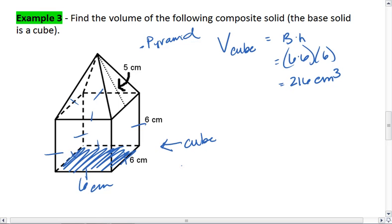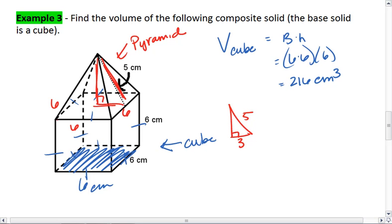Now let's solve for the volume of the pyramid. This pyramid has sides of 6 as well. It has a slant height of 5, so we need to find the height height. To do this, I draw a right triangle, which has a hypotenuse of 5 and a base of 3, because that's half of this side length.